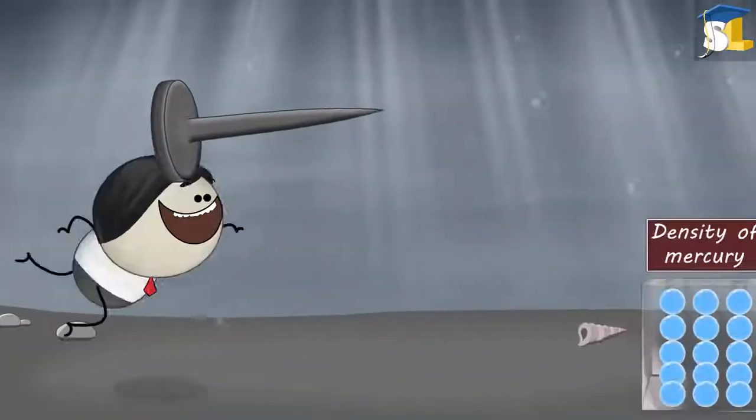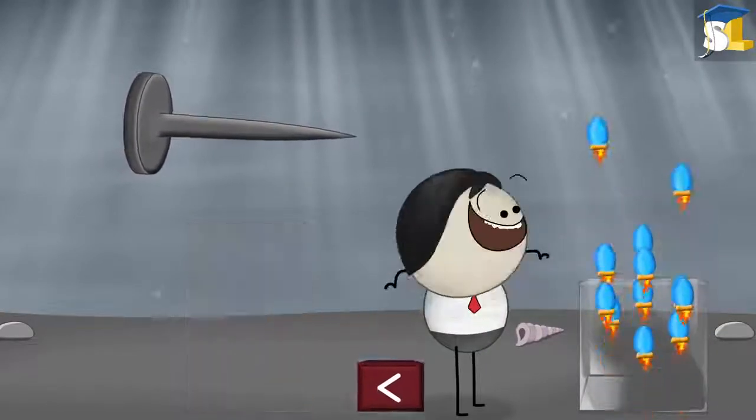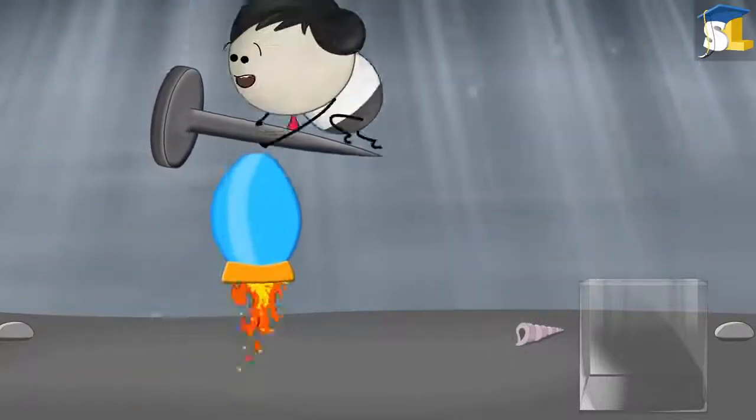However, in the second case, as the density of mercury is comparatively more than the iron nail, the upward force exerted by mercury is more. Hence, the nail floats on mercury.